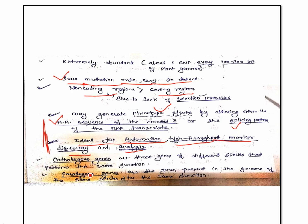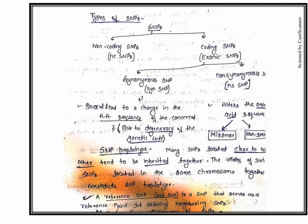Two important terms — orthologous and paralogous genes — frequently appear in CSIR exams and are relevant to SNPs. Orthologous genes are those from different species that perform the same function. Paralogous genes are present in the same species genome and have the same function, being created mainly by duplication or polyploidization events.